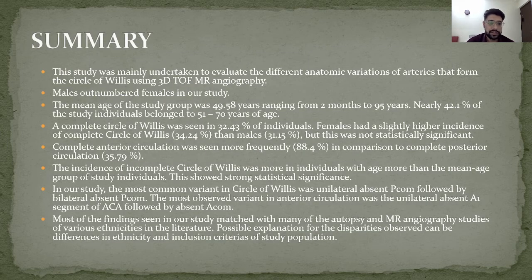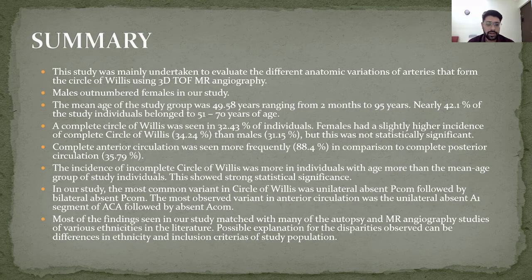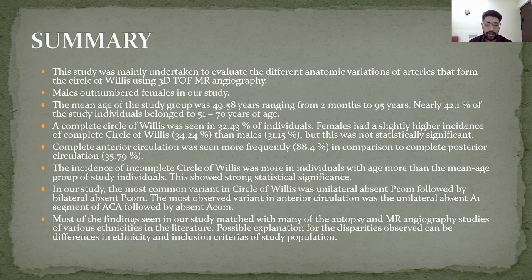To summarize our study: the study was undertaken to evaluate the different anatomic variants of arteries that form the circle of villas using 3D time of flight MR angiography. Males outnumbered females in our study. The mean age of the study group was 49 years, ranging from 2 months to 95 years. Nearly 42% of study individuals belonged to the 51 to 70 years age group. A complete circle of villas was seen in 32% of individuals. A complete anterior circulation was seen more frequently at 88.4%. The incidence of incomplete circle of villas was more in individuals with age greater than the mean age of 49 years, which showed strong statistical significance. The most common variant was unilateral absent posterior communication, followed by bilateral absent posterior communication.